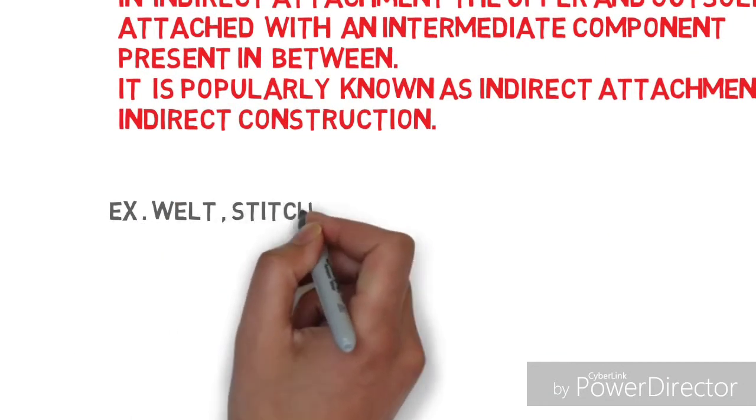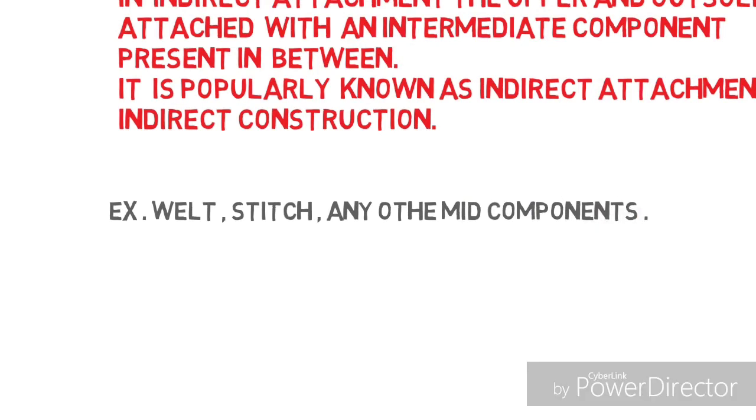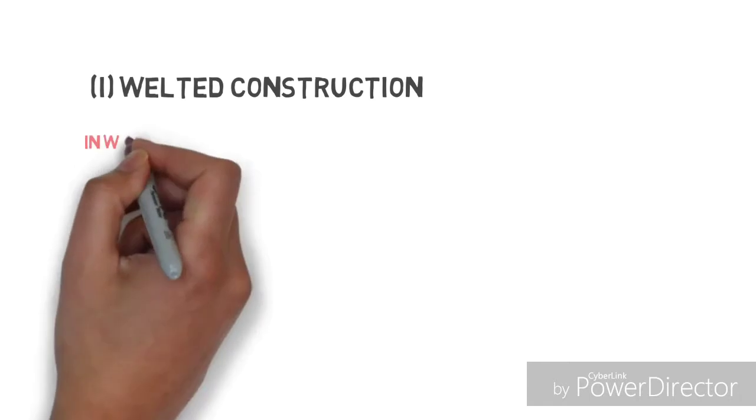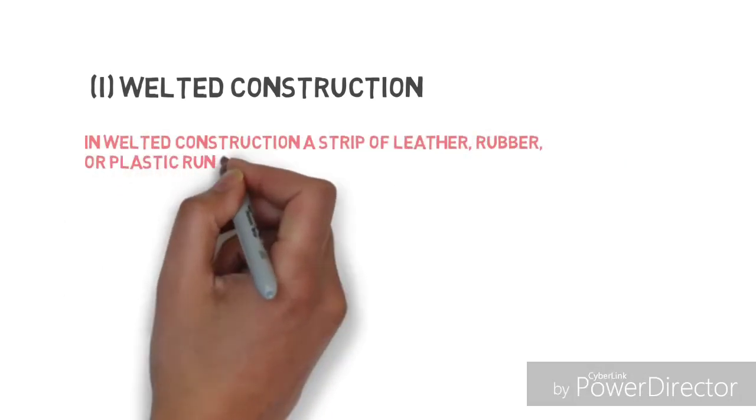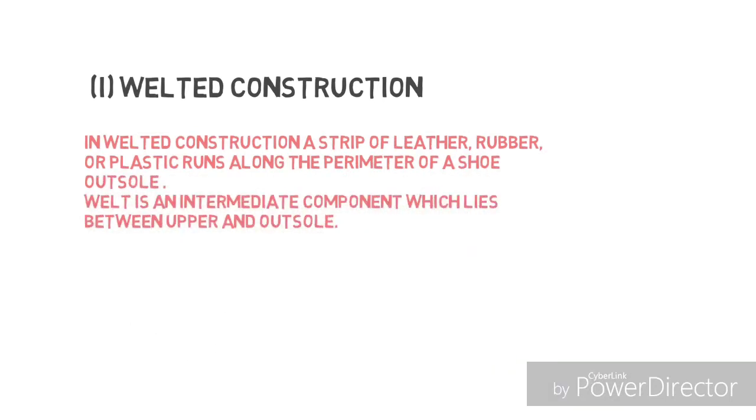First example is welted construction. In welted construction, a strip of leather, rubber, or plastic runs along the perimeter of the shoe outsole. The welt is an intermediate component which lies between the upper and outsole.